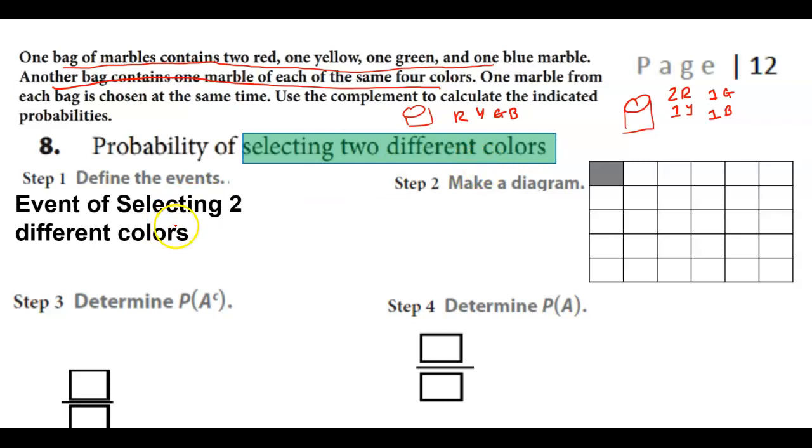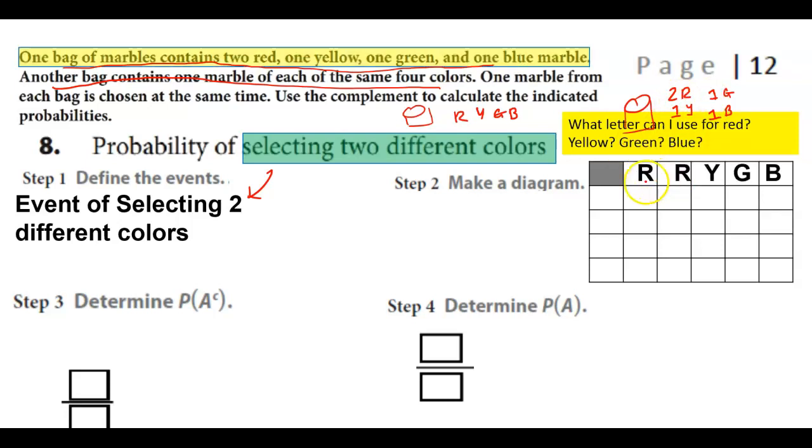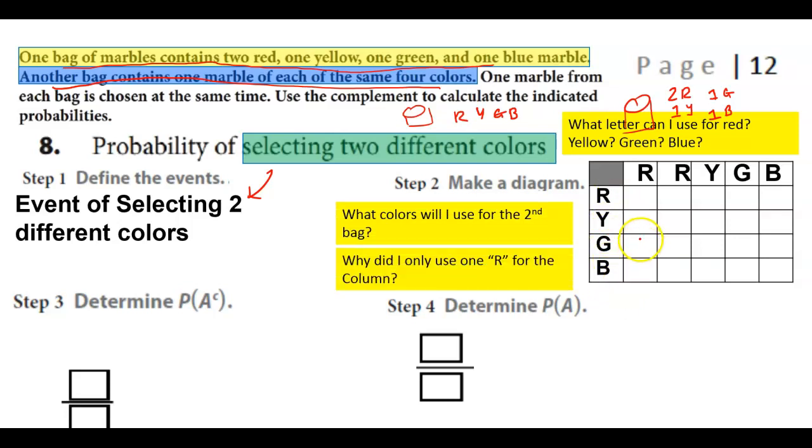So first thing we're going to do is define what the event is asking for. Selecting two different colors. All right, that wasn't that hard because we're just copying that down. Making a diagram, we're going to create a picture. What letter can I use for red, yellow, green, or blue? Oh spoiler alert, I kind of already used that. Red, red, yellow, green, blue because there's two reds. For the next one it's red, yellow, green, blue because there's one of each. Why did I only use R for the first? Well because there's only one, it's one of each color in one bag and two of reds in the other bag. Come on, get with it.